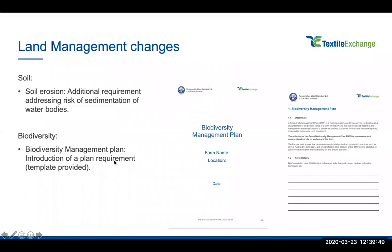As brief background to the changes: in addition to reviewing the wording of the existing standards, we conducted a detailed benchmarking process comparing the Responsible Wool Standard with 12 other standards, to ensure the RWS was comparable and to identify key gaps. We reviewed all the land management criteria, with a large focus on biodiversity, and briefly also looked at soil, fertilizer, and pesticide criteria. Most of the changes I'll go through relate to biodiversity. The first one is around soil erosion — one of the themes running through the changes is a focus on water bodies, including rivers, lakes, and wetlands. There's recognition that the impacts of land management don't just occur on the farm itself; some key impacts actually occur off-farm when sediment, fertilizer, or pesticides run off into a river and downstream.